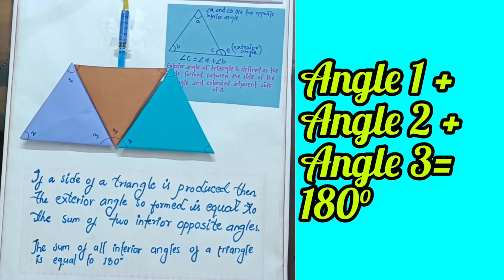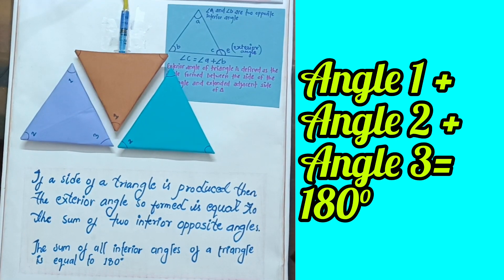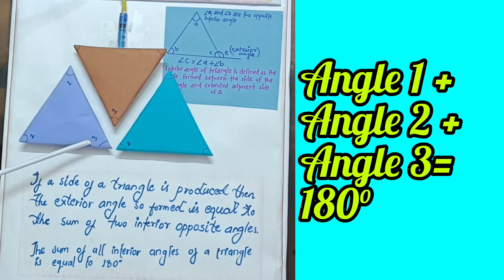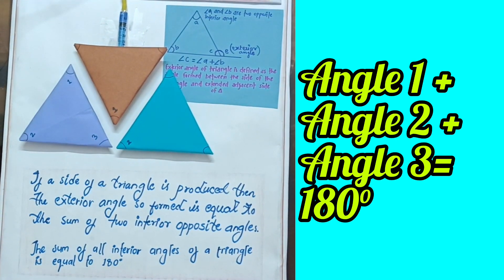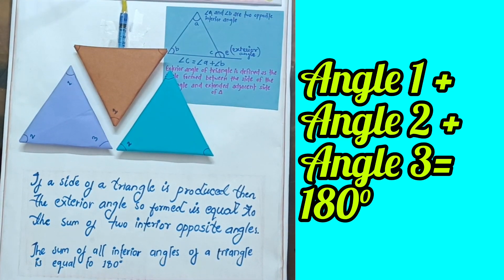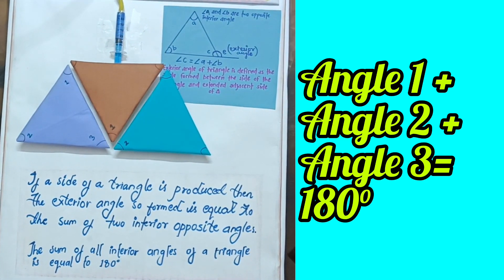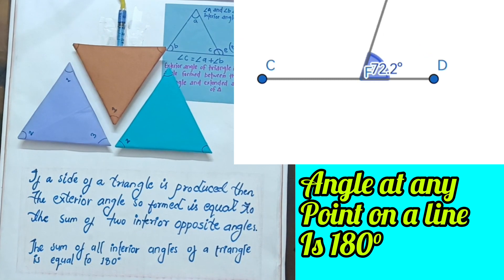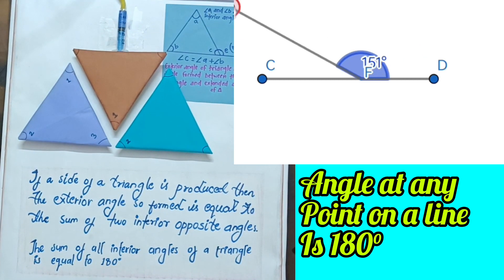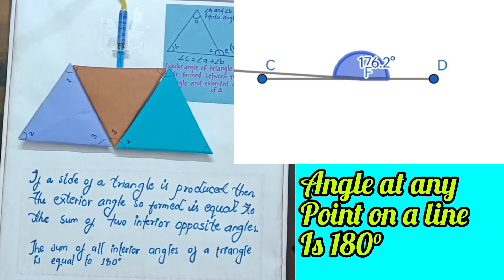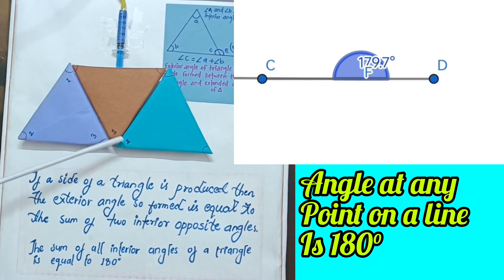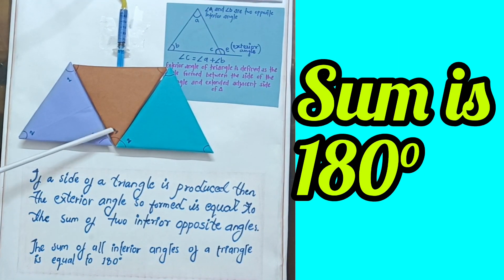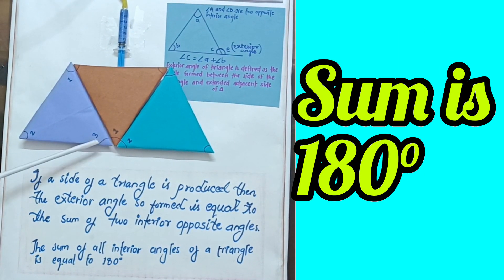Here I am showing three angles of a triangle — angle 1, angle 2, and angle 3 — arranged as shown in the model. All angles form a straight line. As we know, the angle at any point on a straight line is 180 degrees, so the sum of all these angles is also 180 degrees.